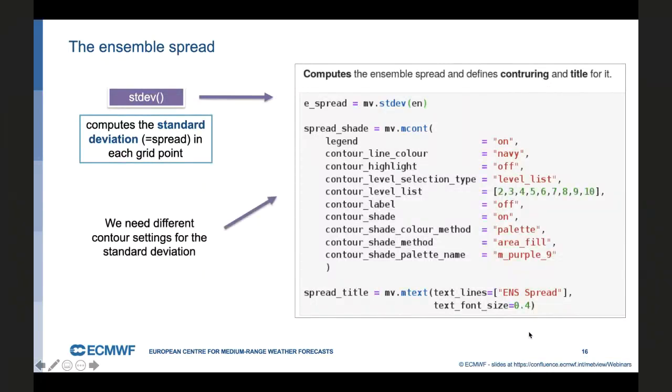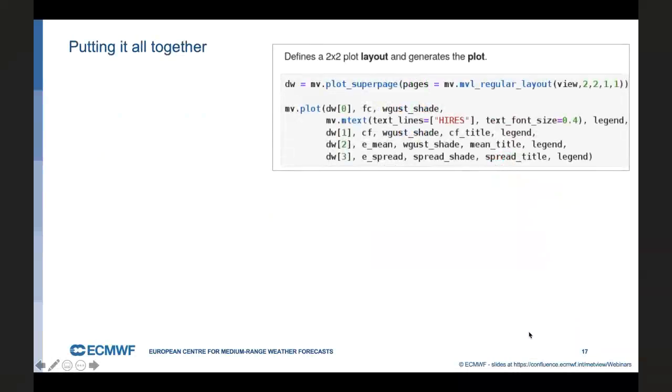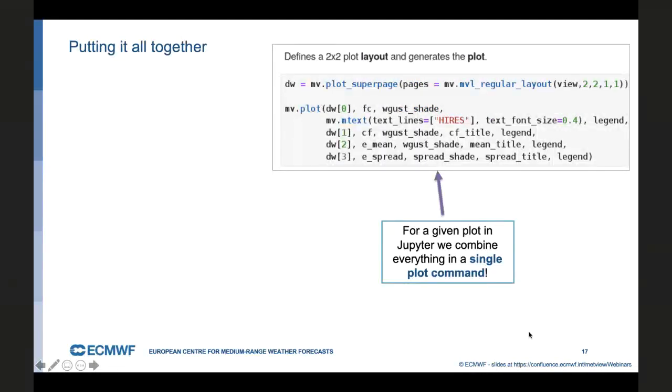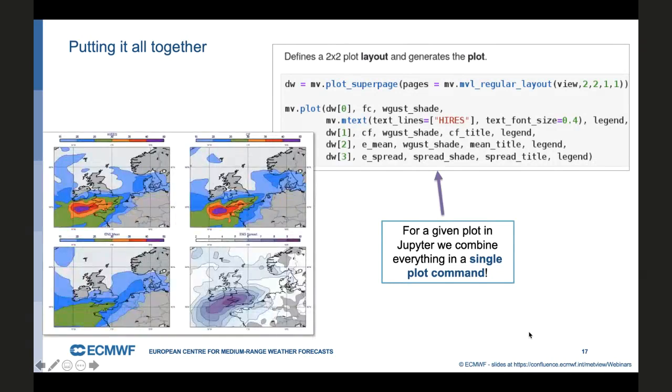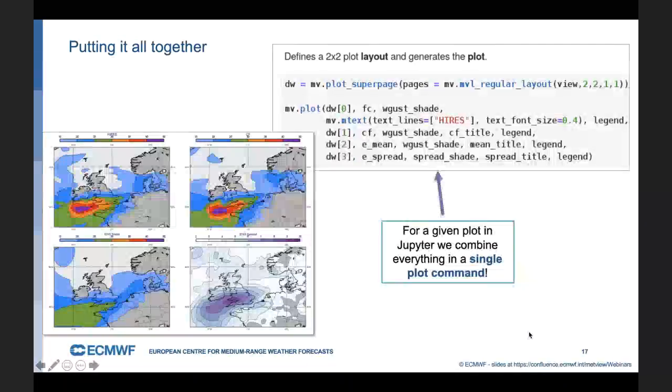So we just need to put it together. First, we need to define the layout where we store the maps. We use the plot_superpage command. And then because when we work with Metview in the Jupyter notebook, we combine all the plot objects into one single plot command. We have a quite big plot command, which basically tells for each target map what we want to plot there. And we get in the end this very nice plot, which shows us the forecast contains some uncertainty as the storm hit the UK.